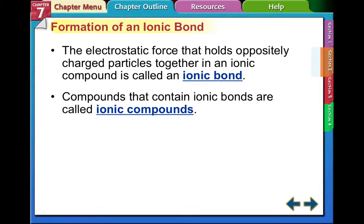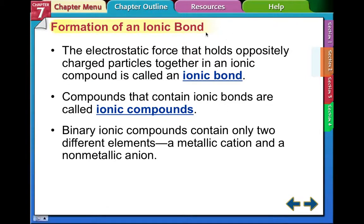So what is an ionic bond? It is the electrostatic force that holds oppositely charged particles together. Remember, you have to have a positive and a negative. Compounds that contain ionic bonds are called ionic compounds. Binary ionic compounds contain only two different elements. This is really important when we get to section three that you remember the term binary. Bi means two. You're going to have a metallic cation on the left-hand side of the table and a non-metallic anion on the right-hand side. Cation is positive, anion is negative.